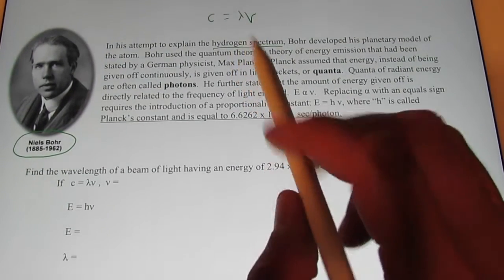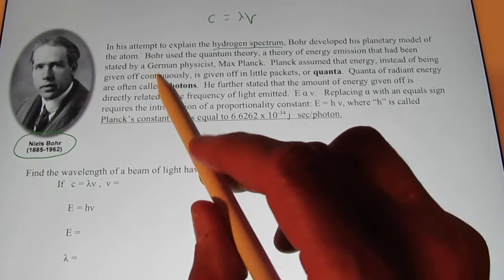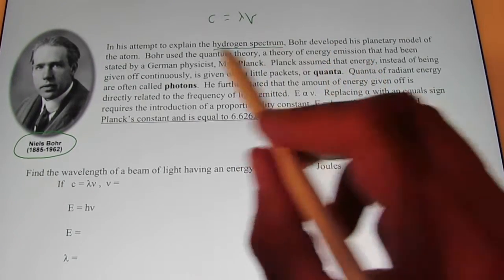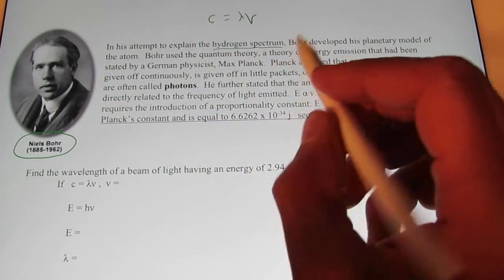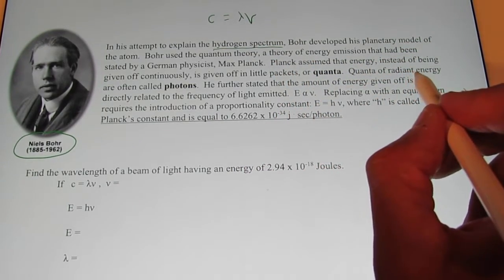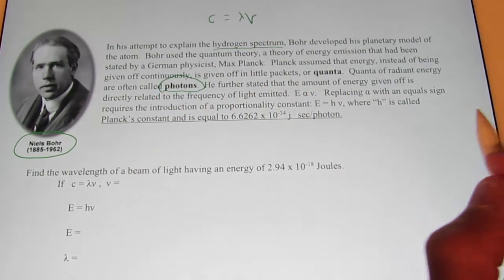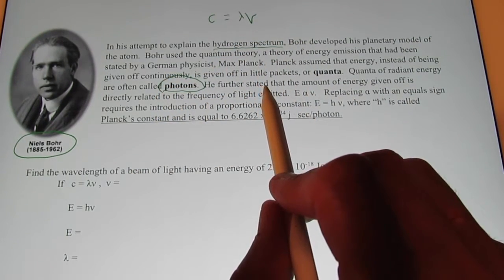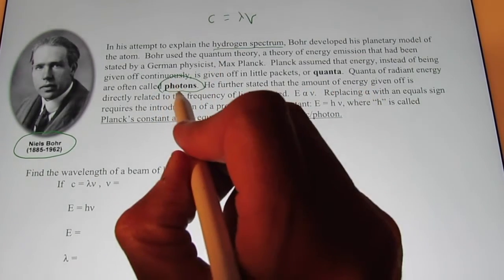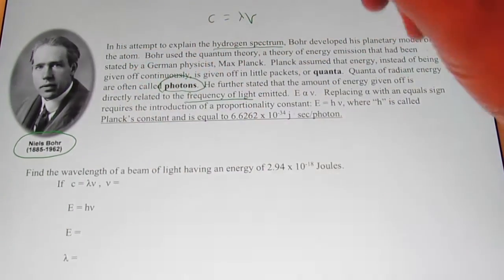He used something called quantum theory, a theory of energy emission that had been stated by the German physicist Max Planck. Planck assumed that energy, instead of being given off continuously, is given off in packets or quanta. Quanta of radiant energy are often called photons. You probably heard that word before. He further stated that the amount of energy given off is directly related to the frequency of the light. We've talked about that earlier.